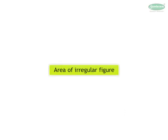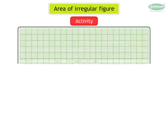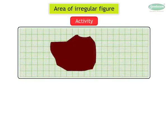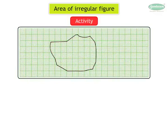Now let us see how to find the area of an irregular figure. Activity: Number 1 — place the figure on graph paper. Number 2 — trace the outline and remove the object. Number 3 — count the number of complete squares inside the figure. Here it is 4 squares.